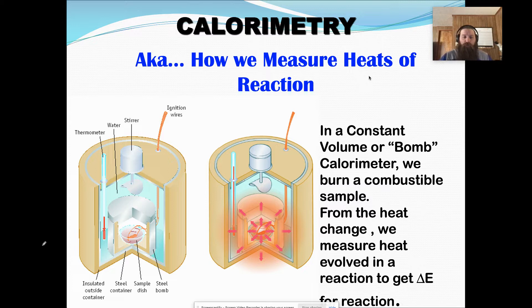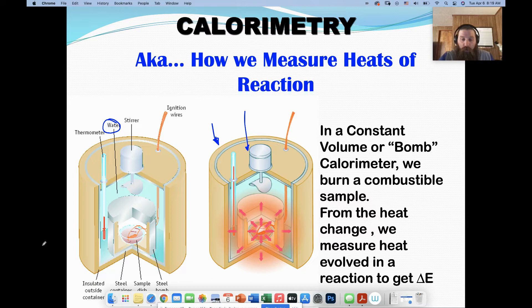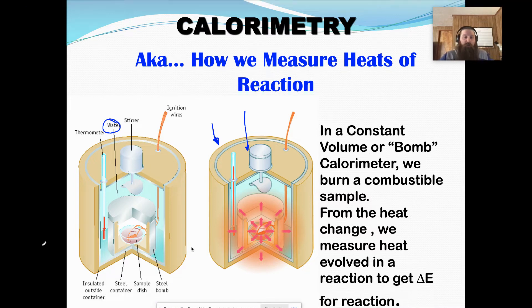The way a calorimeter works is it is insulated. It has this outer wall right here, and the top are both insulated. A lot of times we'll use coffee cups. We'll use styrofoam because styrofoam is a good insulator. There's water inside the calorimeter. And we can use water in a calorimeter because we know the specific heat of water, number one. And number two, it's really easy to measure changes in the water with this thermometer that we have stuck down in there.